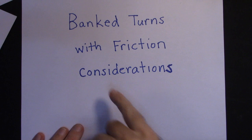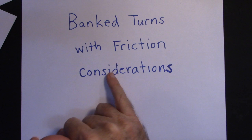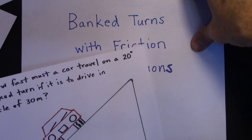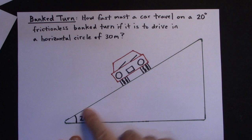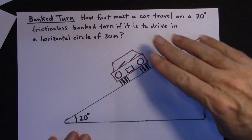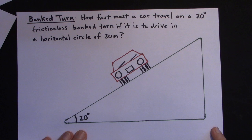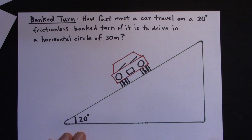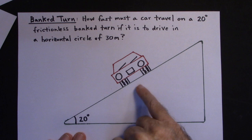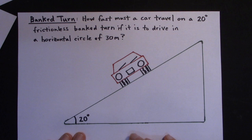In this video we're going to be talking about cars traveling around banked turns, and we're going to add friction into the consideration eventually. Like a car going around a banked exit ramp — maybe not banked this much, but it's banked, and that helps the car turn. This is one of those problems where the perspective you draw it from actually matters a lot.